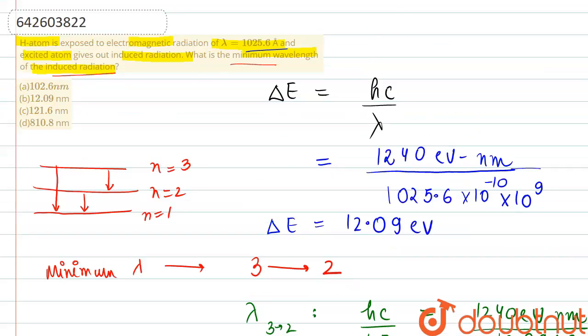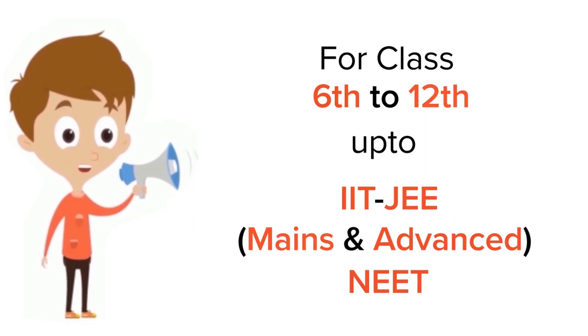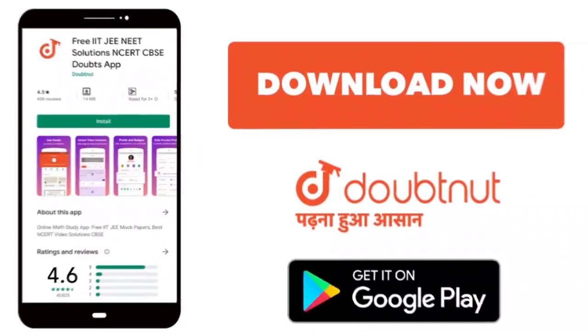So we can simply take this as the answer. Option number A is matching up, so this is the answer. Thank you. For class 6 to 12, IIT-JEE and NEET level, trusted by more than 5 crore students. Download Doubtnet app today.